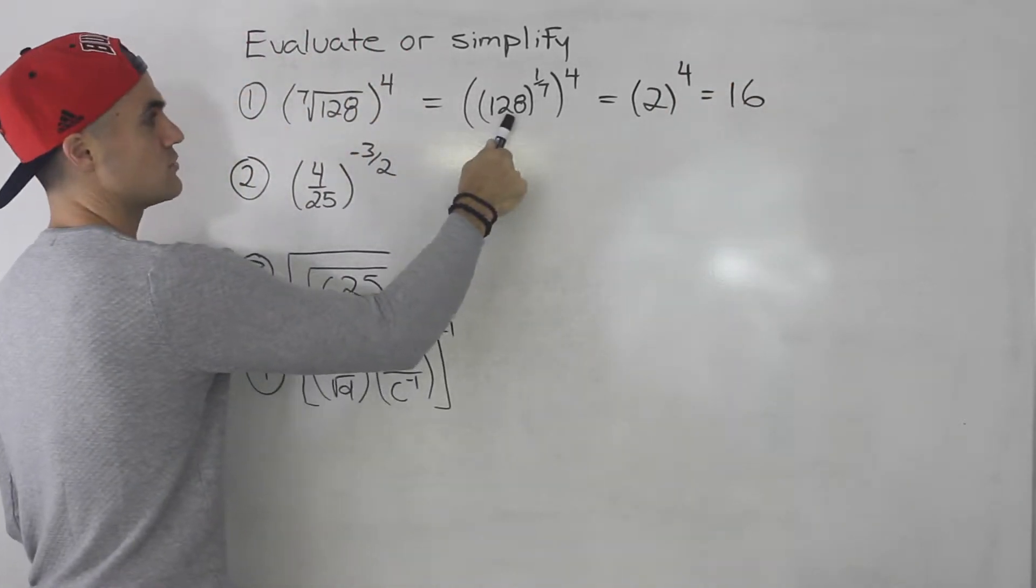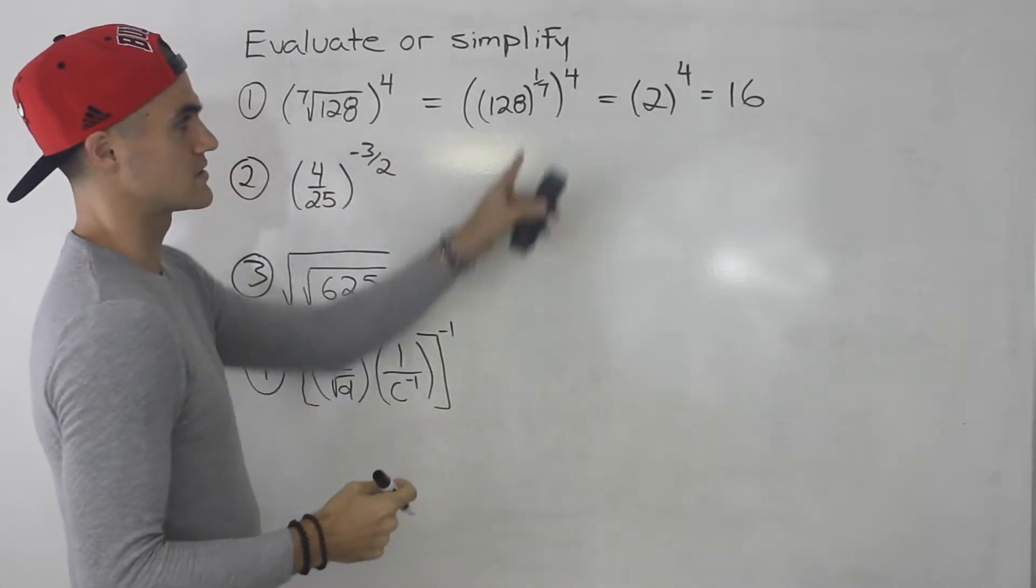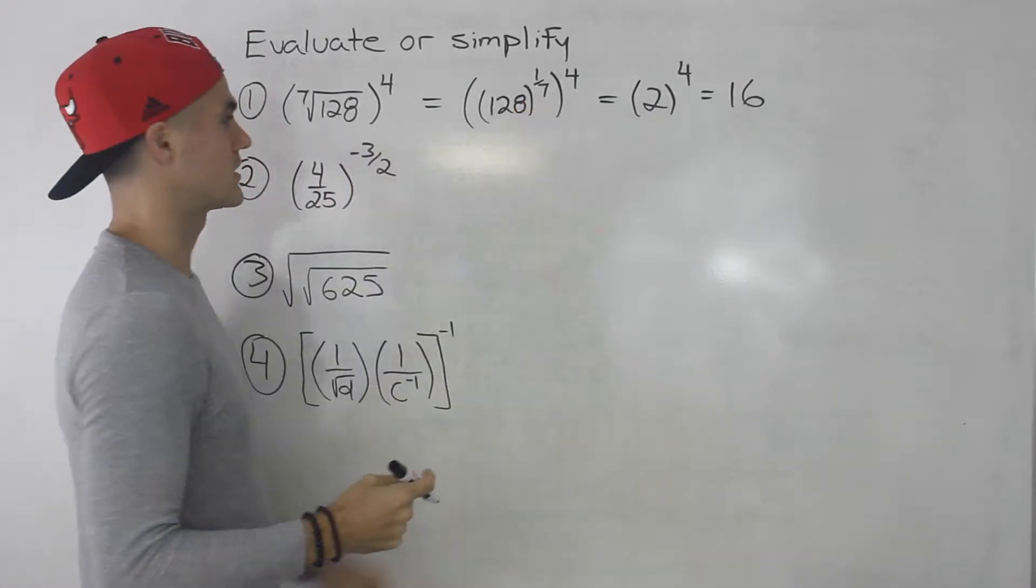Now, you didn't necessarily have to do this part here. You could have just took the seventh root of 128 and put 2, but I like to show the rational exponents.